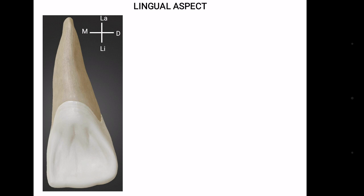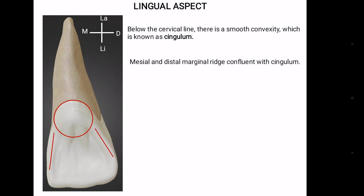Lingual aspect is the surface which is towards the tongue. Below the cervical line there is a smooth convexity which is known as cingulum. It merges with mesial and distal marginal ridges. Ridge is a linear elevation on the tooth and these are named according to their anatomical positions.